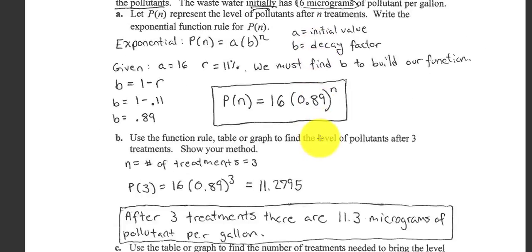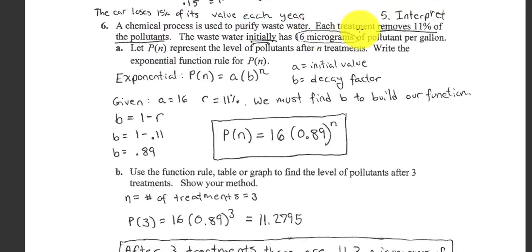Number six, an application problem. So this is tricky. Chemical process, each treatment removes 11%. It removes, take away, makes smaller. So right away, I know this is a keyword that means decay. We're making something smaller. The pollutants are going to be diminished by 11%. And this 11% means the R is 11%. R is 0.11.